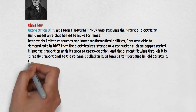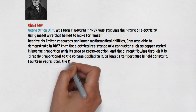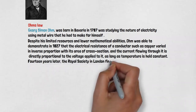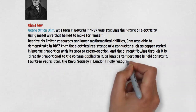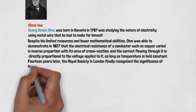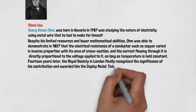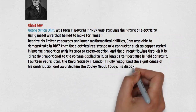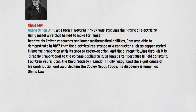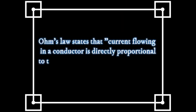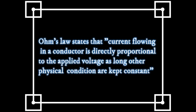14 years later, the Royal Society in London finally recognized the significance of his contribution and awarded him the Copley Medal. Today, his discovery is known as Ohm's Law. Ohm's Law states that current flowing in a conductor is directly proportional to the applied voltage, as long as other physical conditions are kept constant.